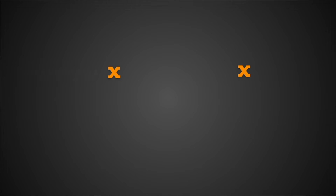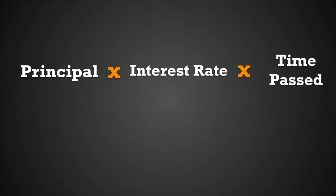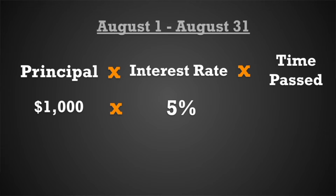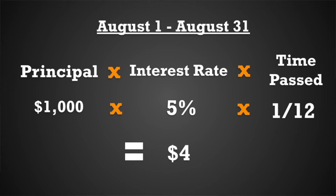Fast forward one month. Since time has passed, your friend now must record an adjusting entry for interest. To record interest, we use a simple formula: principal times interest rate times time passed. In this example, the interest rate is 5%, so we plug in $1,000 principal times 5% interest. From August 1st to August 31st, that's one month, so we multiply by 1 divided by 12, since 12 months is in a year and the interest rate is always annual. After one month, your friend owes approximately $4. He will pay you back in three months once the full note is paid, but for right now he must record an adjusting entry to show the interest accrued.